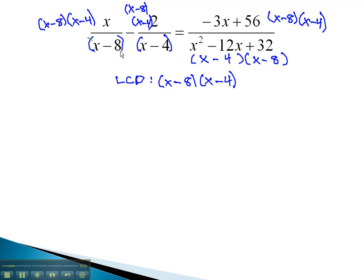And then, when we go back and reduce the x minus 8's out, we're left with x times x minus 4. The x minus 4's divide out. We're left with negative 2 times x minus 8, equals both x minus 4 and the x minus 8 divide out, leaving us with negative 3x plus 56.